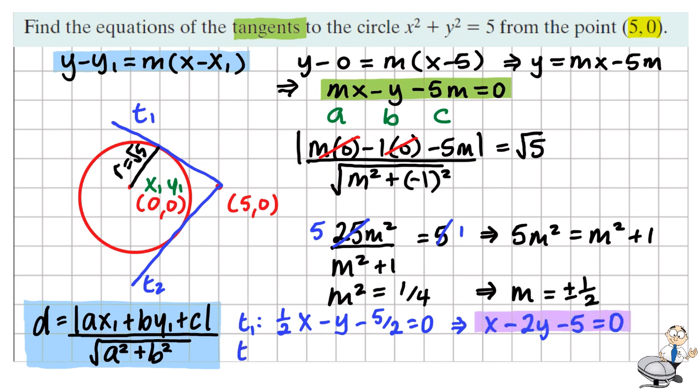And for the other equation, we're subbing in m equals negative a half. Doubling this and multiplying it by negative one, we see that x plus two y minus five equals zero. And these are the two tangents.